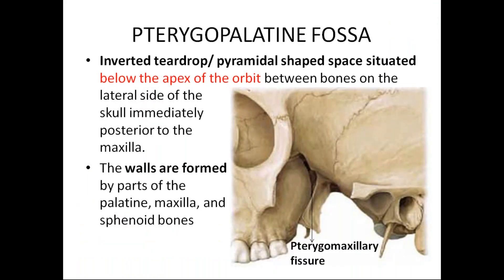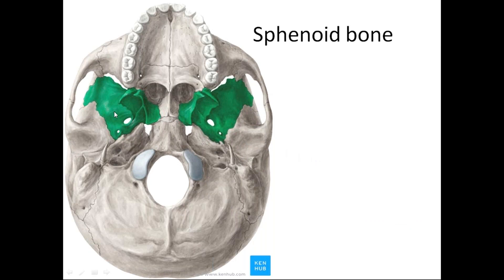The pterygopalatine fossa is an inverted teardrop or pyramidal-shaped space situated below the apex of the orbit, between the bones on the lateral side of the skull, immediately posterior to the maxilla. Its walls are formed by three bones: maxilla, sphenoid, and palatine bone. Before going into the boundaries of the pterygopalatine fossa, you need to know some features of these three bones. The sphenoid bone — seen in the inferior view of the skull — includes the greater wing of the sphenoid and the pterygoid process of the sphenoid.